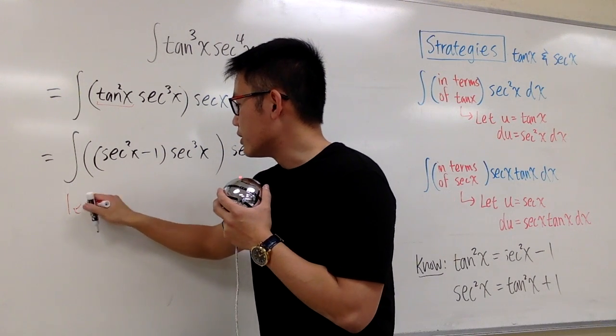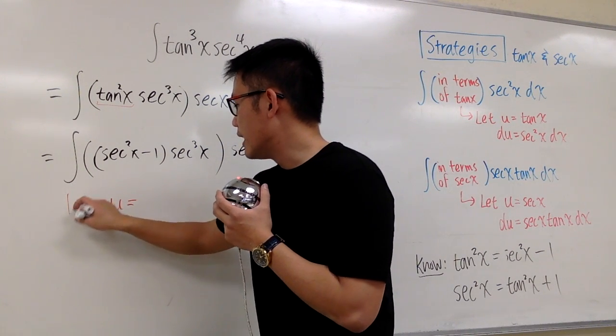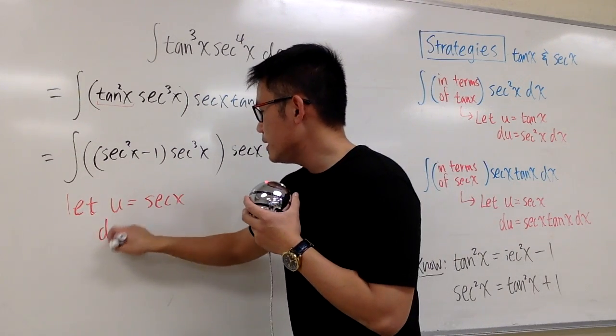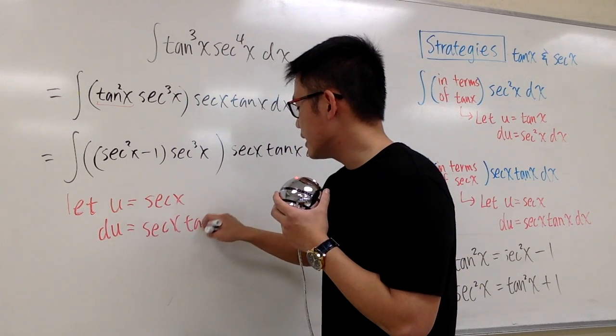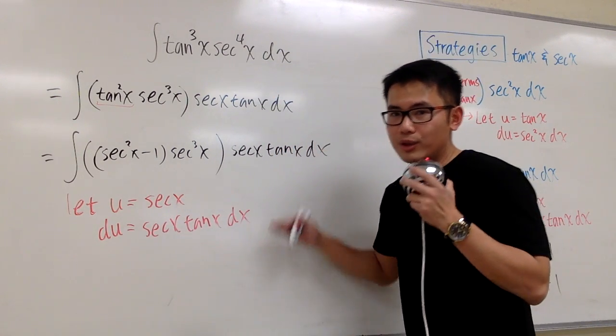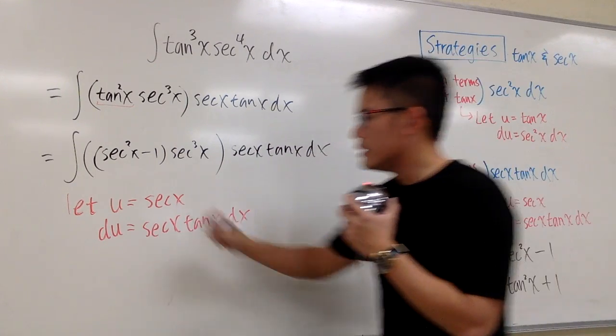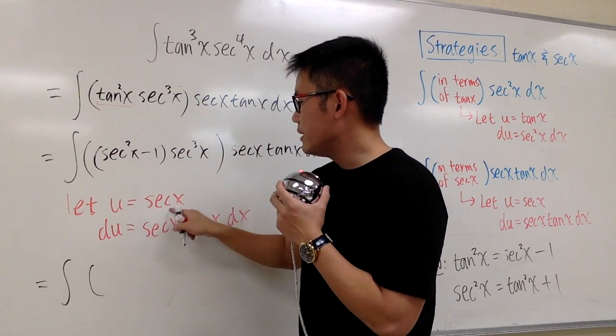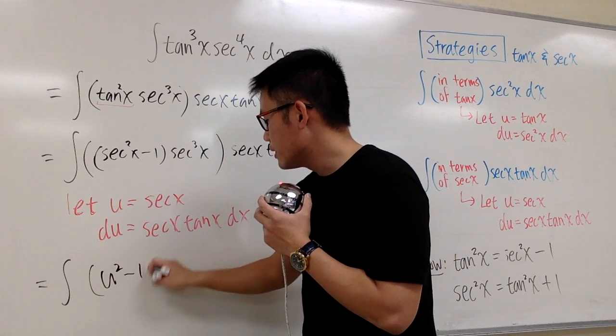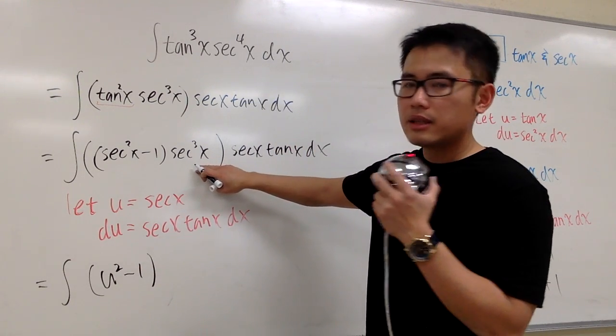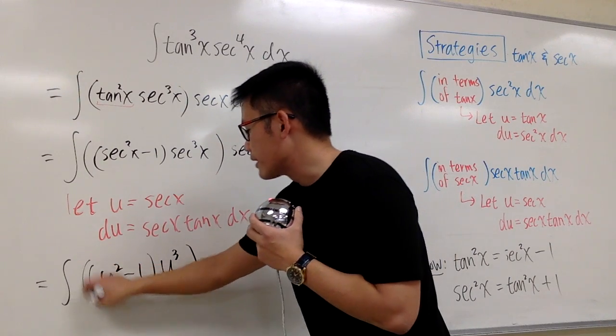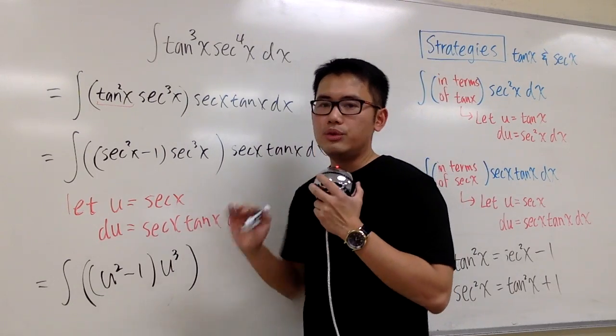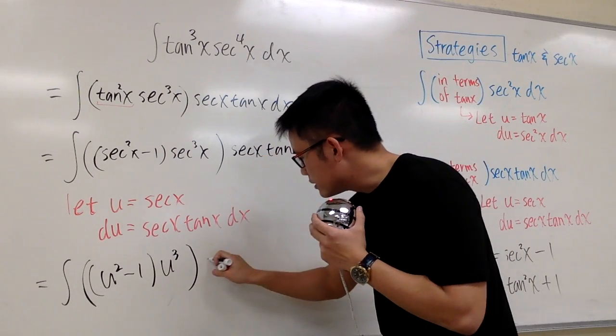Now, I can just say that u equals secant x. So that we know du will be secant x tangent x dx. And we can take this integral into the u world right away. This will be the integral. And this first parenthesis, we have the secant squared x, meaning we will have u squared, and then minus 1. And then we times this by secant to the 3rd power x. So we will have u to the 3rd power. And then for this differential, secant x tangent x dx, that's exactly the same as du.